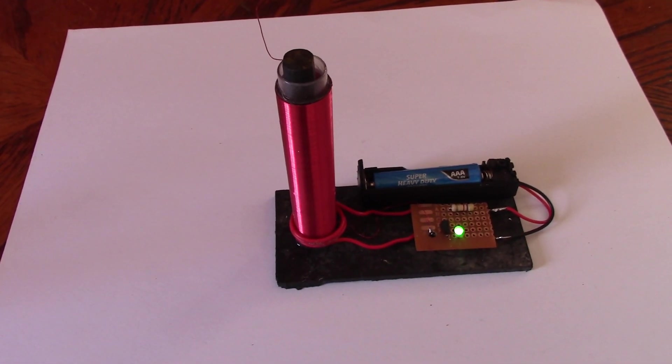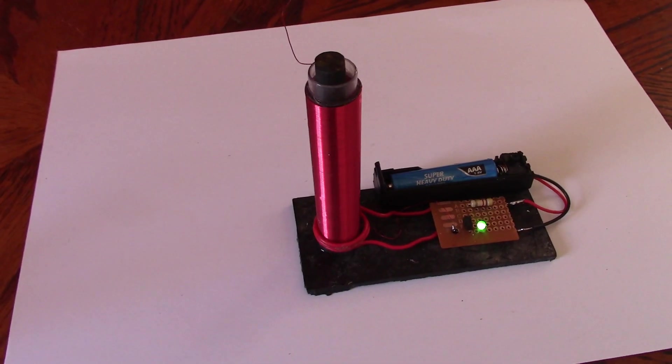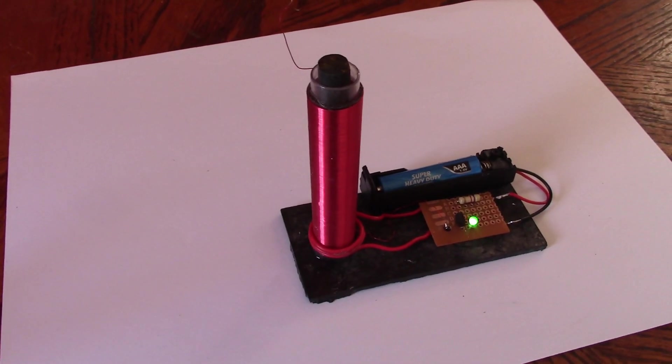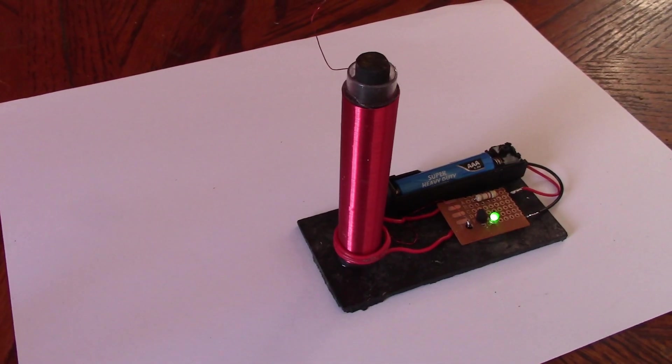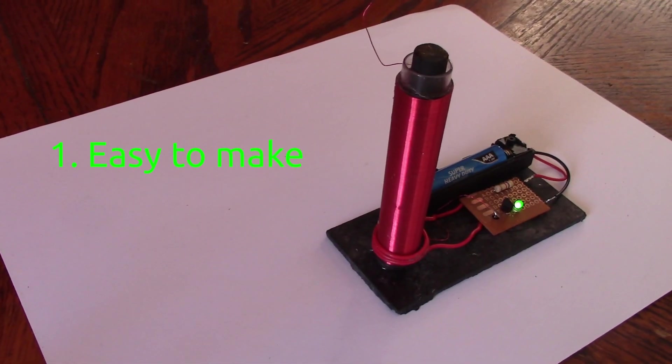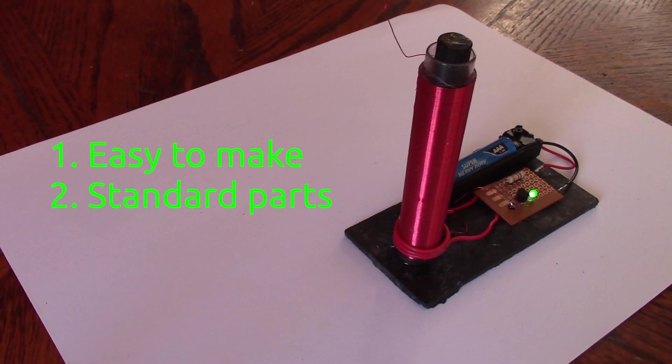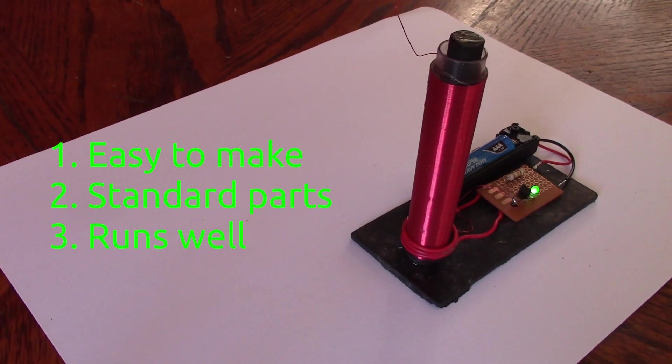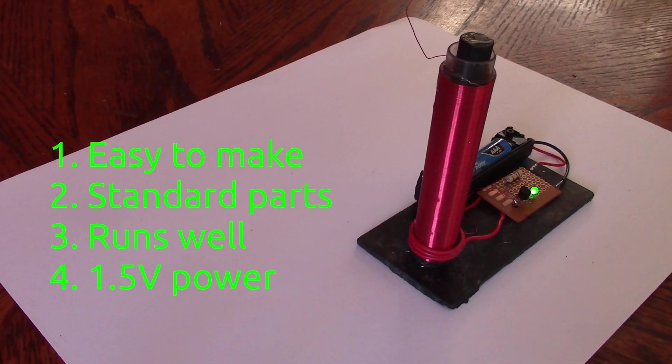Welcome back to the channel. Today we'll have a bit of fun with a classic project, a Slayer Exciter Tesla Tower but with ferrite in the middle. The idea has been for it to be easy to make, with standard easy to find parts, ticks the performance boxes and be just 1.5 volt powered.